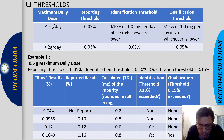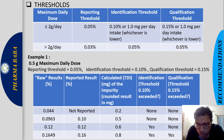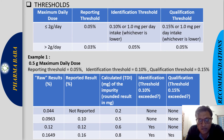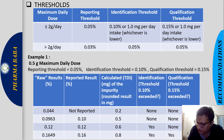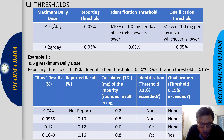Now checking the qualification threshold: 0.5 g × 0.15% = 0.75 mg, which is less than 1 mg, so 0.15% is the qualification threshold. The impurity at 0.12% is less than 0.15% — no need to qualify. The impurity at 0.16% exceeds the qualification threshold of 0.15%, so this impurity needs to be qualified.